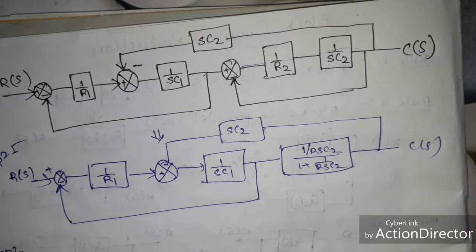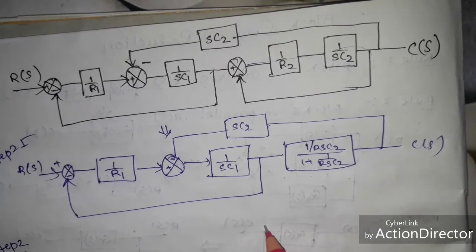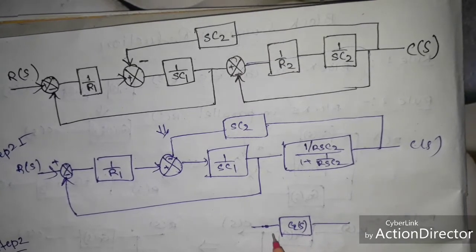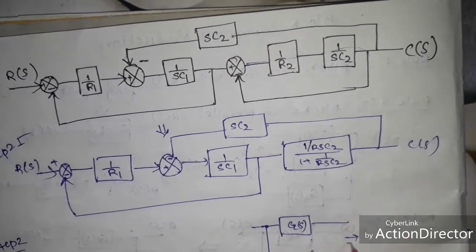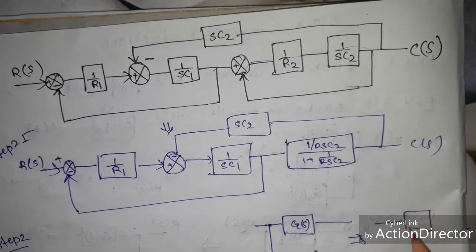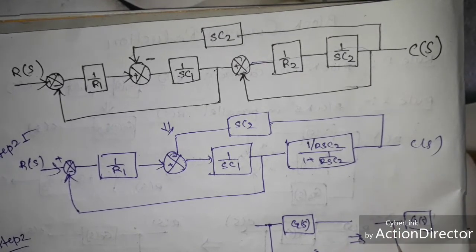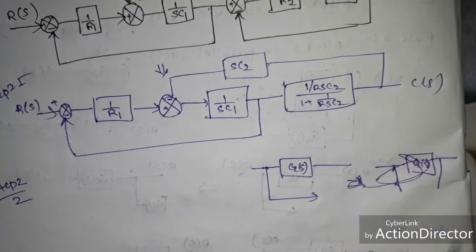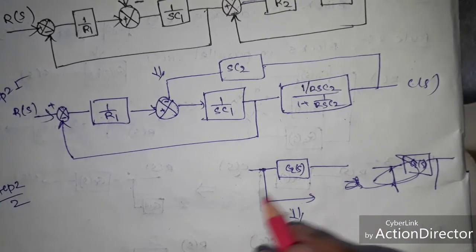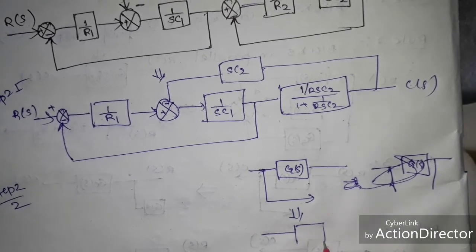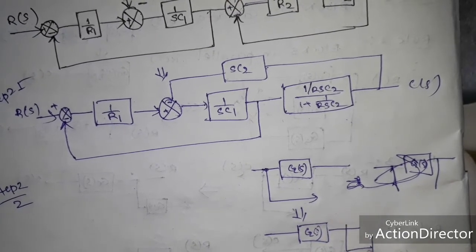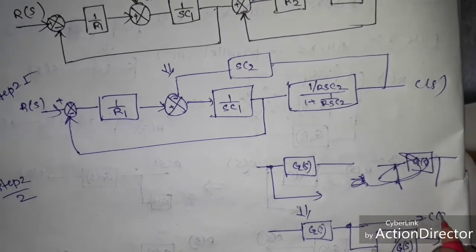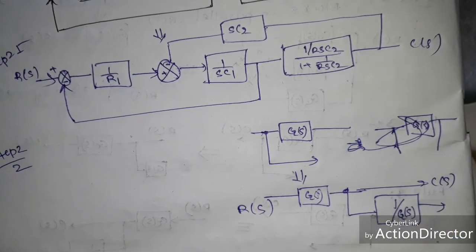We apply rule 4. In rule 4: if we have a G(s) block and a takeoff point before it, and we want to move the takeoff point after the G(s) block, then in the new feedback path this becomes 1/G(s). So after applying rule 4, the takeoff point is moved to after this block.